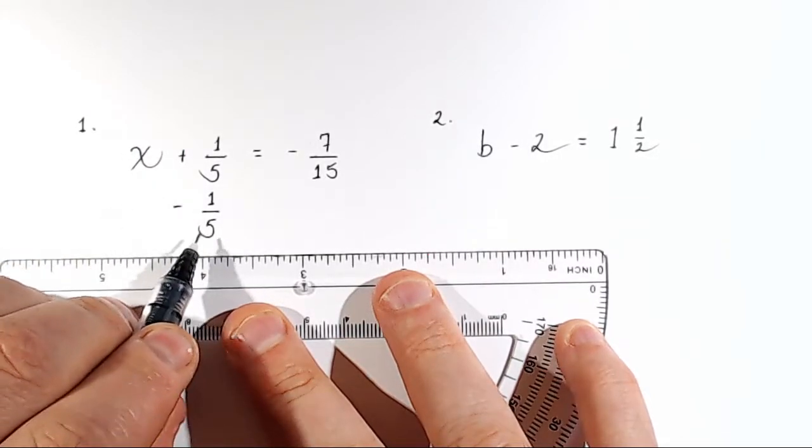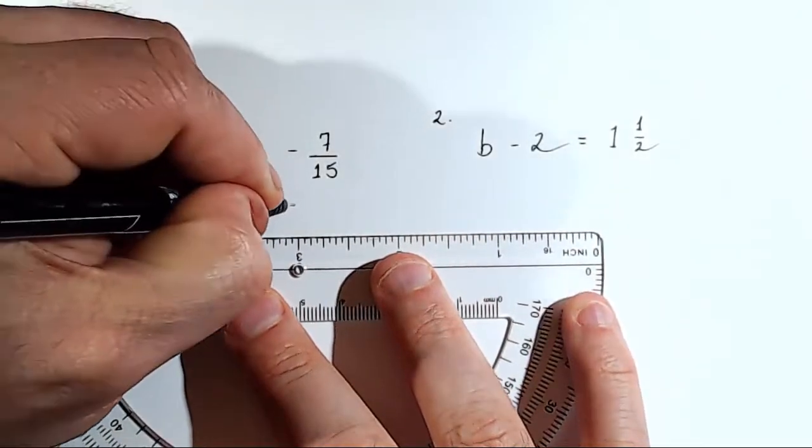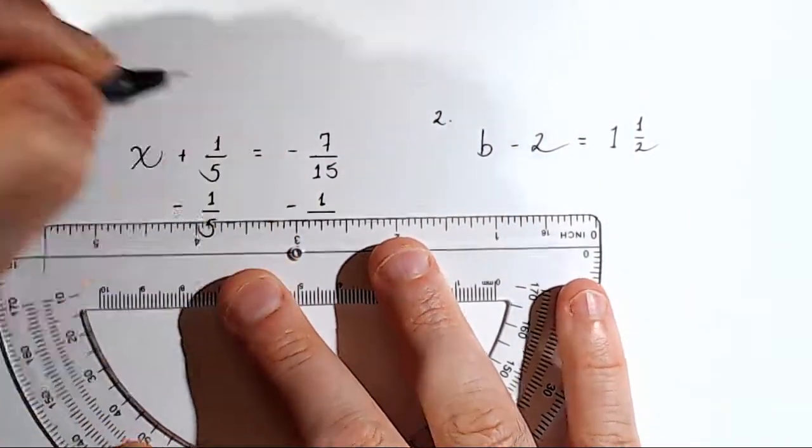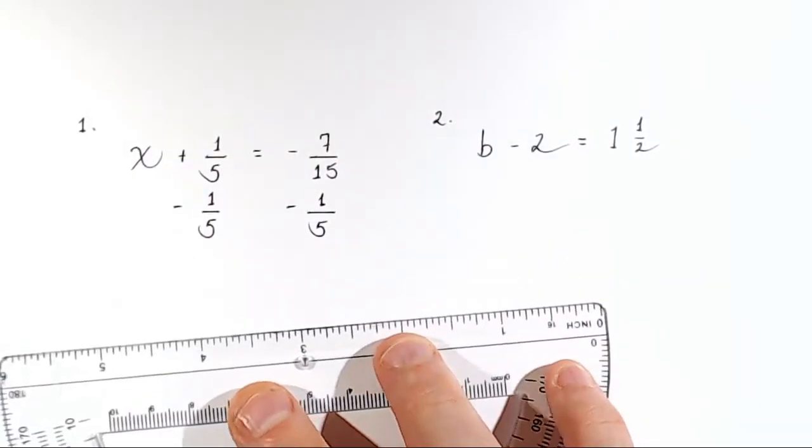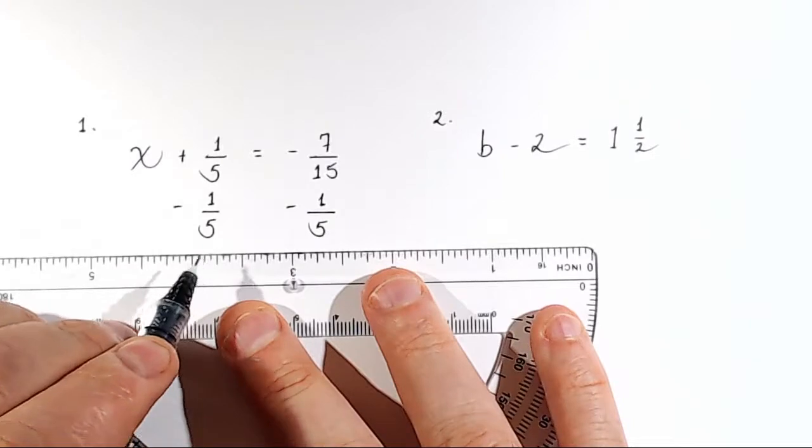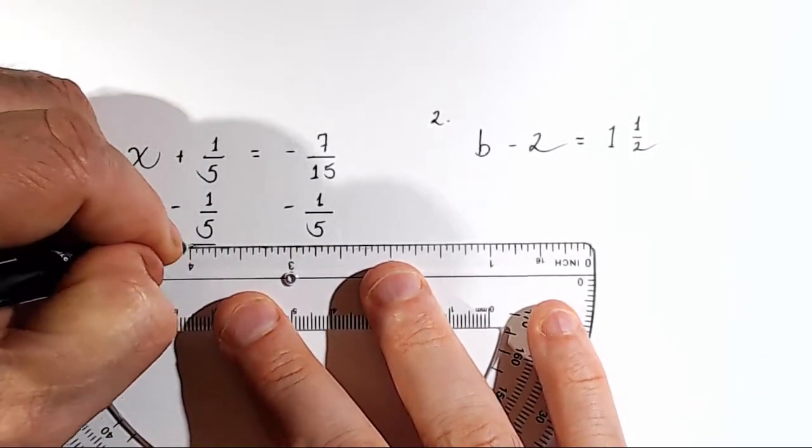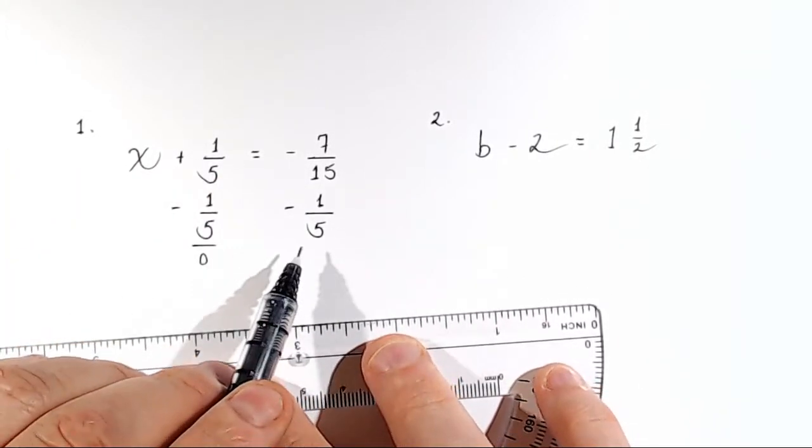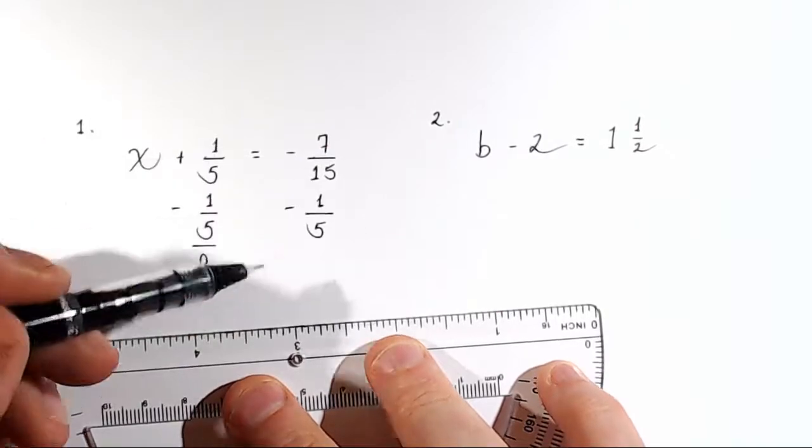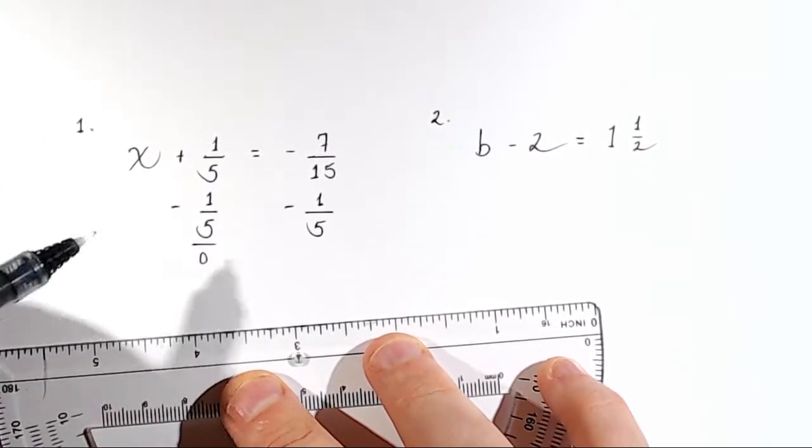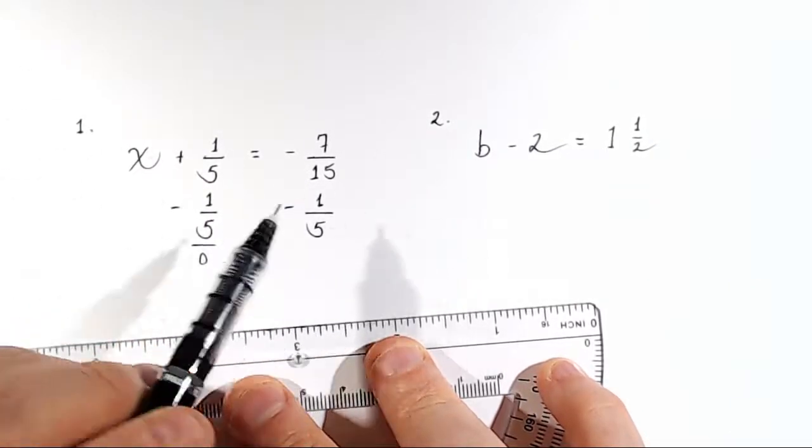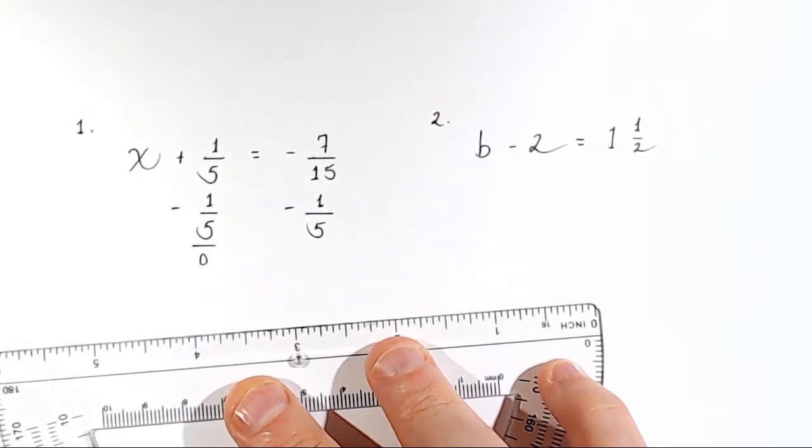So I subtracted one-fifth on the left side. I have to subtract one-fifth on the right side as well. So on the left side, one-fifth minus one-fifth just equals zero. And at this point, it's not going to be possible for us to immediately perform a subtraction here because the two rational numbers we're trying to subtract have different denominators. So before we can do anything, we have to find a common denominator.